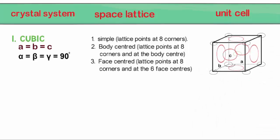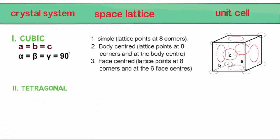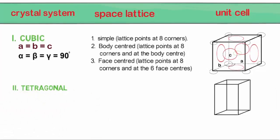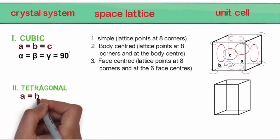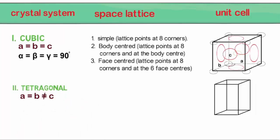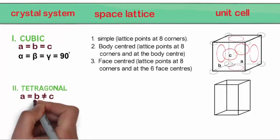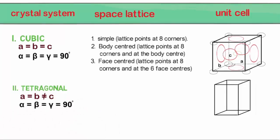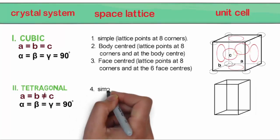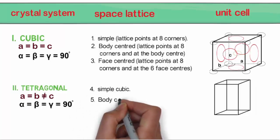The second crystal system is called tetragonal. Here A and B are equal but C has a different length. Alpha, beta and gamma angles are all equal to 90 degrees in a tetragonal space lattice. Tetragonal structure can have two different space lattices: simple cubic and body centered cubic.